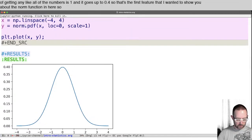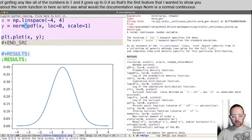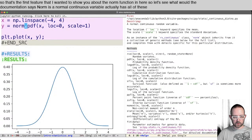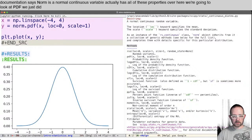So let's see what the documentation says. Norm is a normal continuous variable actually has all of these properties over here. We're going to look at PDF. We just did RVS, CDF, and FIT down here, and also PPF.